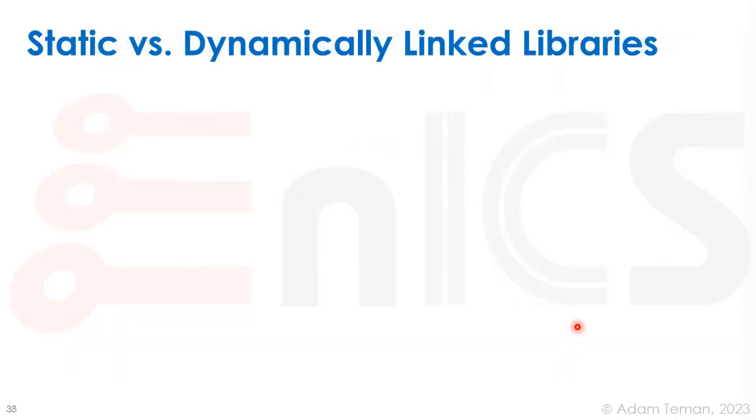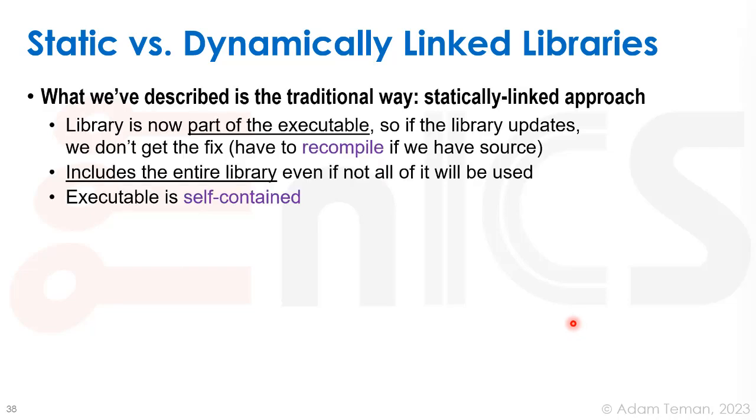Another point is about static versus dynamically linked libraries. What we discussed above is the traditional way—a statically linked approach. We took all the files and put them into one single executable with all the absolute addresses. The library is now part of the executable. If we update the library, we'll have to recompile the whole program. It also includes the entire library, which could be redundant. However, this executable is self-contained, so with embedded systems, this is what we do—provide one piece of program code with everything inside.